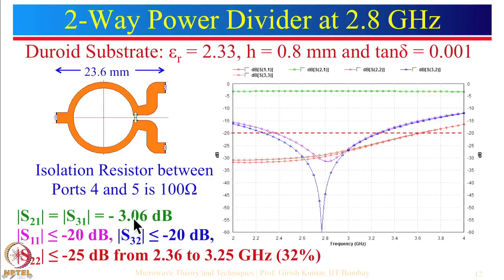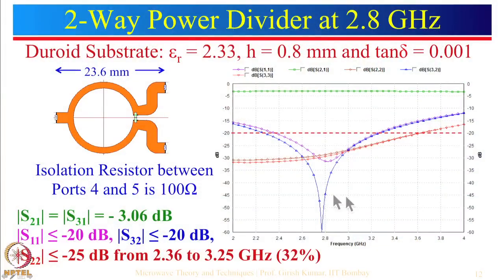Instead of minus 3 dB we get minus 3.06 dB due to losses including fringing fields and small radiation losses. Comparing with the lossy substrate: for that case we got minus 3.17 dB, so the difference is only about 0.1 dB. For defense or satellite communication, performance is paramount and cost is secondary. For commercial applications (telecom, CDMA, GSM 900/1800, 3G, 4G, Wi-Fi), low-cost substrate is generally used.